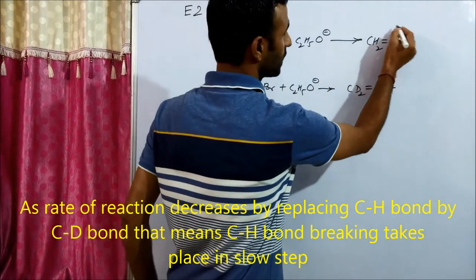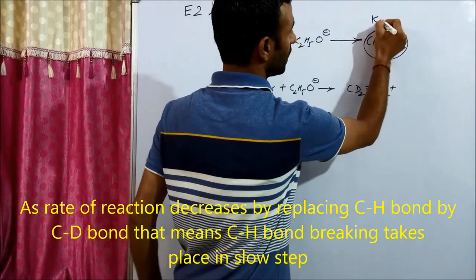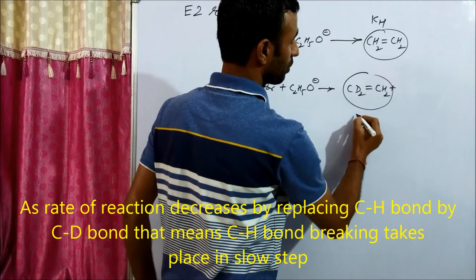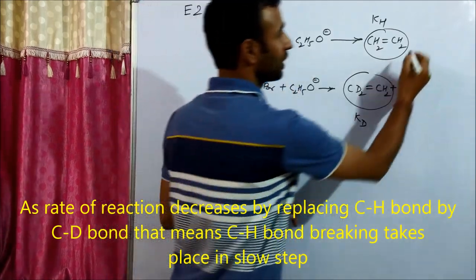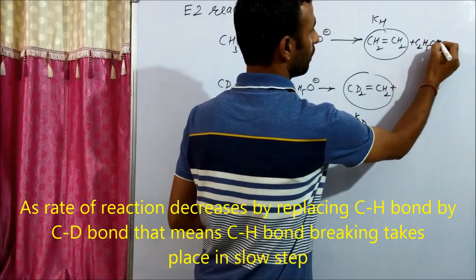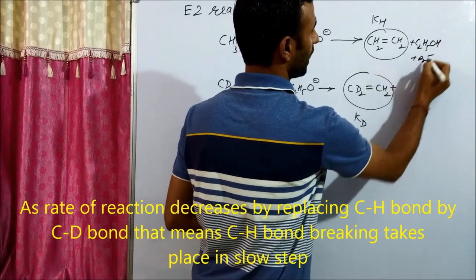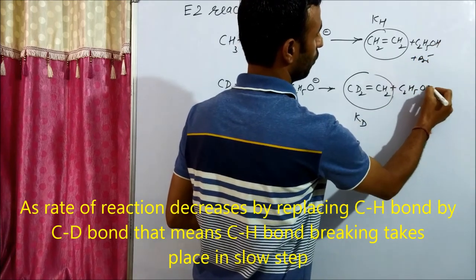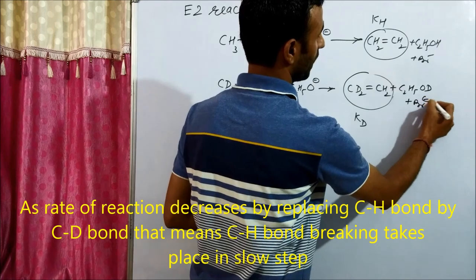Now, let us take an example. Its rate constant is KH and its rate constant is KD. Along with that, we get C2H5OH, Br negative, C2H5OD plus Br negative.